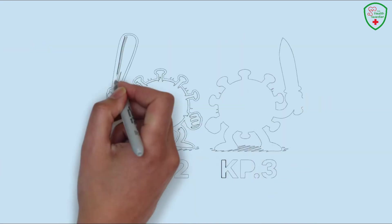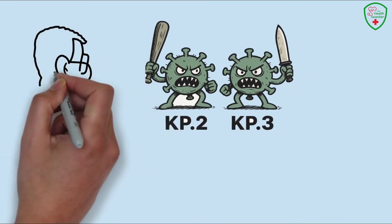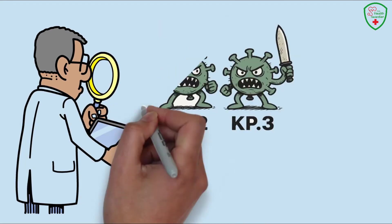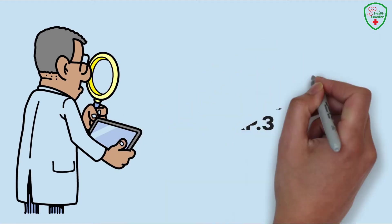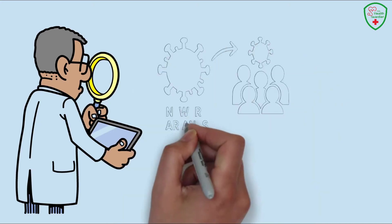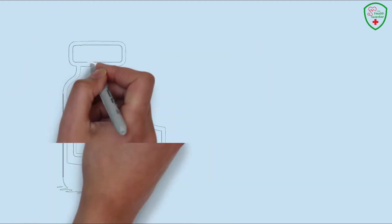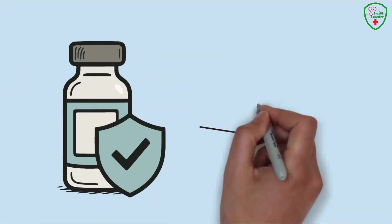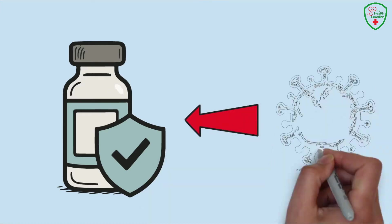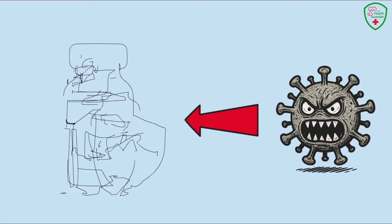What's fascinating about KP.2 and KP.3 is how they've evolved. They're part of a monitoring list by the WHO as variants under monitoring, meaning scientists are keeping a close eye on them. Data from the past few months shows they've outpaced some older variants in transmission, especially in urban areas where people are packed together. Plus, the fall 2024 vaccines, updated for the JN.1 lineage offer some cross protection, but these FLIRT variants might still sneak past in some cases. So, staying vigilant with testing and prevention is more important than ever as we head into the summer of 2025.